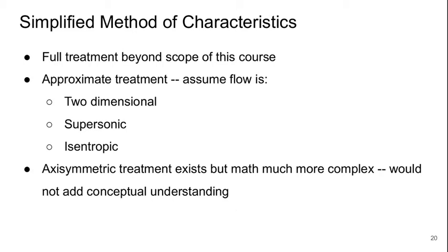So we'll spend the next few slides looking at the method of characteristics. A complete treatment of this is beyond the scope of this course. It's something you might deal with if you took a course in gas dynamics or compressible flow. But we'll deal with a very simplified approximate treatment and the main things that we're going to do is assume the flow is two-dimensional. So this is a big simplification because we're actually dealing with axisymmetric flows in the rocket nozzle. We'll assume the flow is everywhere supersonic, that there's nowhere that it's going to sort of have shocks and then go down to subsonic. And we'll assume the flow is isentropic.